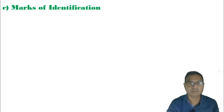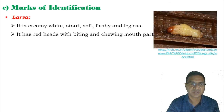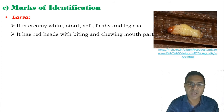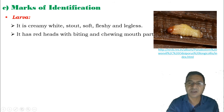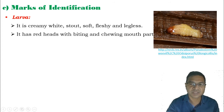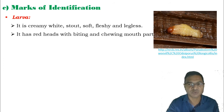The marks of identification: the larva, commonly known as the grub, is creamy white, stout, soft, fleshy, and legless — known as apodous larva. The anterior end has a brownish or red head, and at the terminal end strong biting and chewing mouthparts are present.